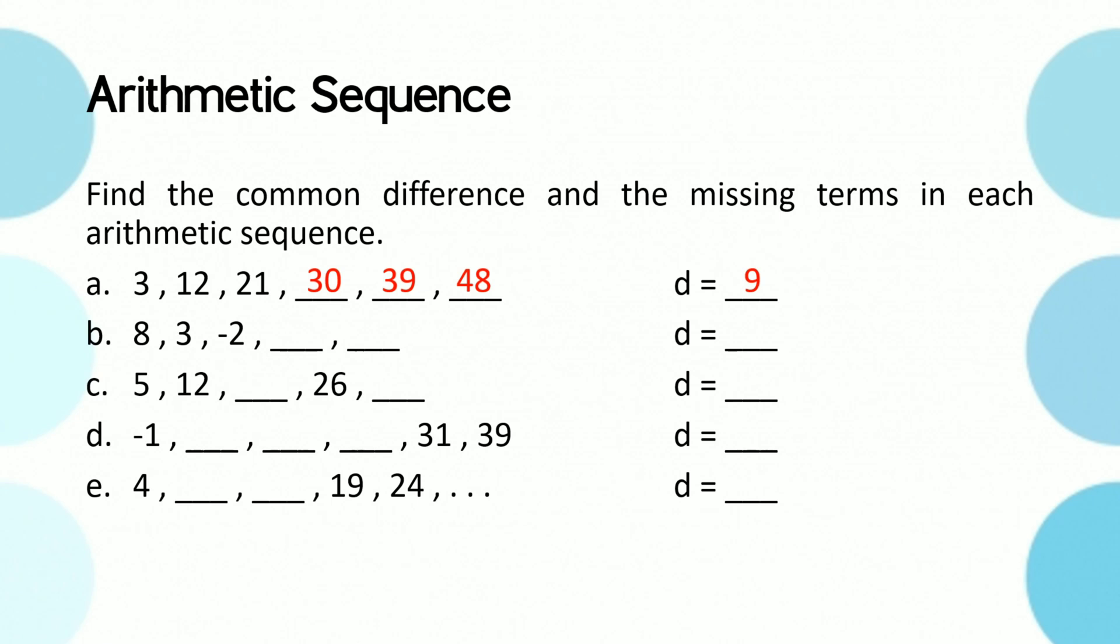For letter b, as you have observed, the pattern of the sequence is decreasing. We could conclude that the common difference is a negative number. That's 3 minus 8 is equal to negative 5. Thus the missing terms are negative 7 and negative 12.